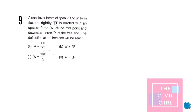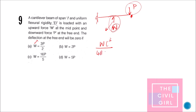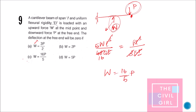Next question: a cantilever beam of span L with uniform rigidity EI has an upward force W at the midpoint and a downward force P at the free end. What is the value of W for zero deflection at the free end? Setting upward deflection equal to downward deflection: the upward deflection due to W is 5WL³/48EI, and the downward deflection due to P is PL³/3EI. Equating and solving: W = (16/5)P. The answer is option C.